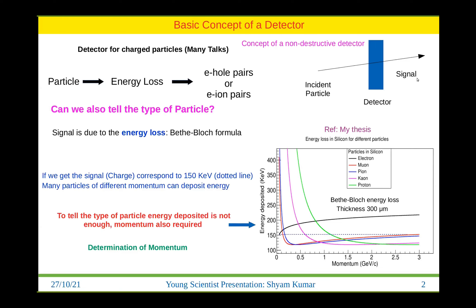The question is: can we also tell the particle type? For this, let's understand the energy loss inside the material, given by the Bethe-Bloch formula. I plotted different particles as a function of momentum for silicon. If we get a signal corresponding to 150 keV, shown by the dotted line, it can be a proton or a kaon — all possibilities are there.